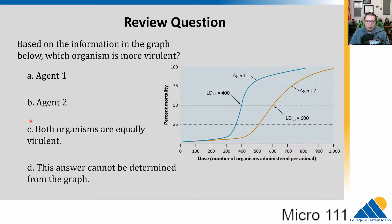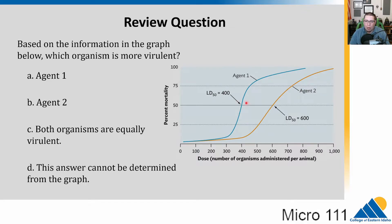Our answer is A, agent 1, because it took fewer organisms to kill half of our test population than agent 2, which took about 600. The less organisms it takes to kill half the test population, the more virulent we call that disease. Virulence is like how severe the agent, how severe the disease is.